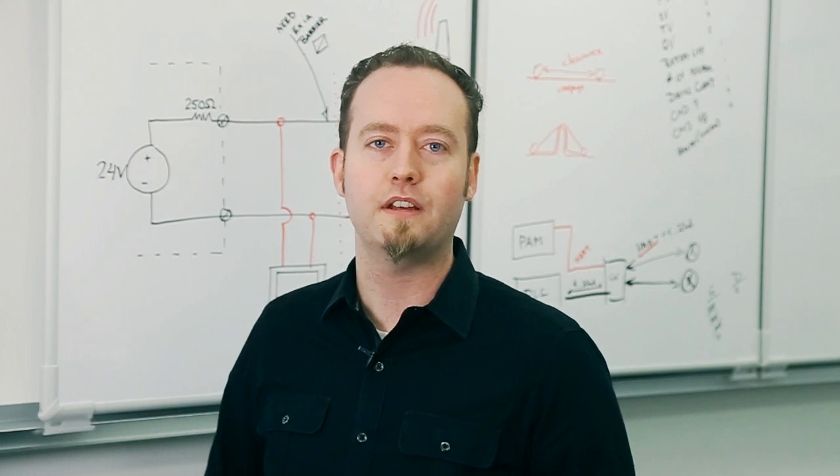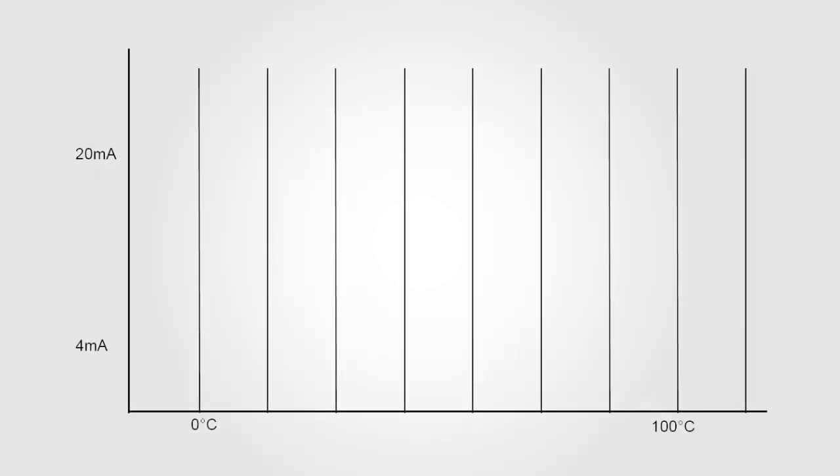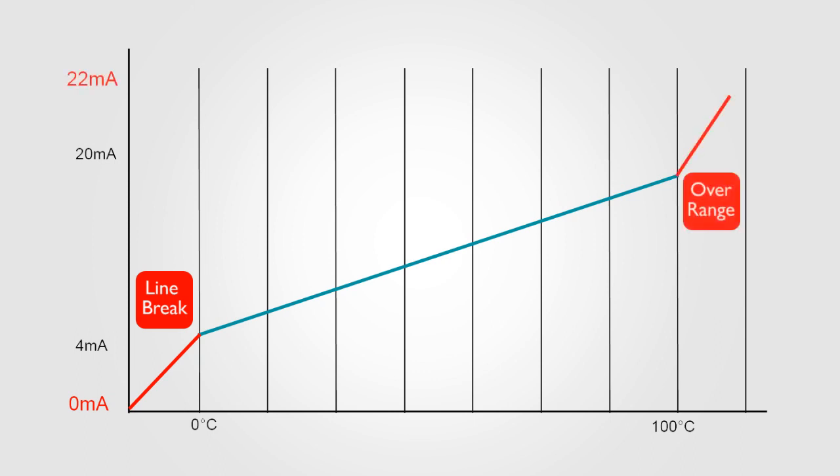When a transducer measures a value like temperature, it's converted to an electrical signal proportional to that temperature. If the transducer is measuring the temperature of a tank of liquid, which normally ranges from 0 to 100 degrees Celsius, it will output a 4 milliamp signal when the temperature is 0 degrees and 20 milliamps if the temperature is 100 degrees. A signal less than 4 milliamps is commonly used to indicate a fault condition, such as a wire or sensor break, while a signal higher than 20 milliamps indicates an overrange condition.